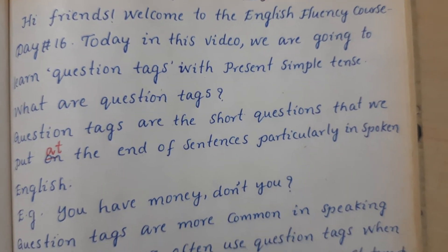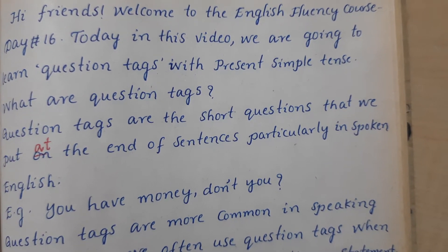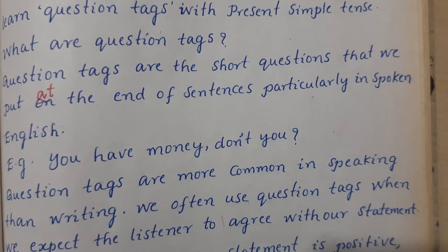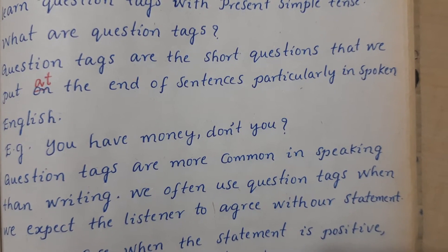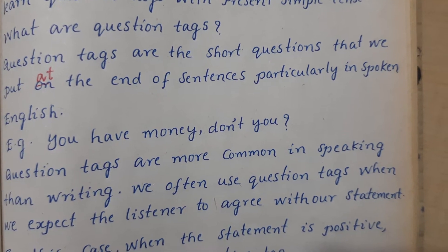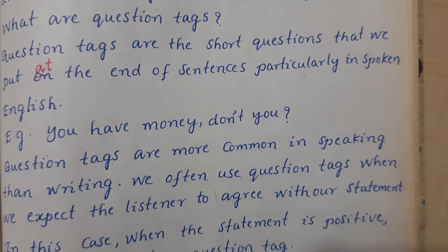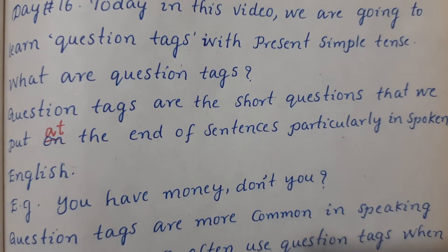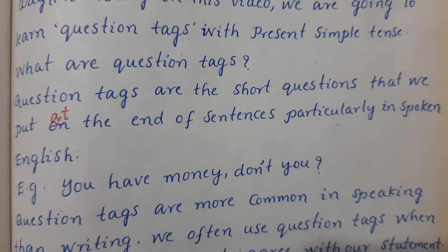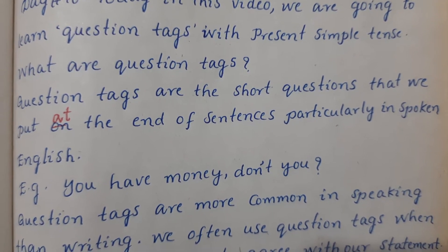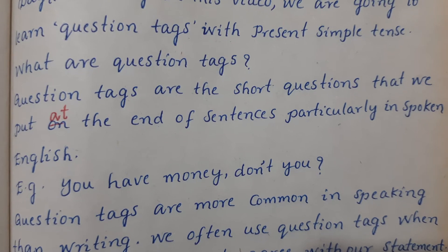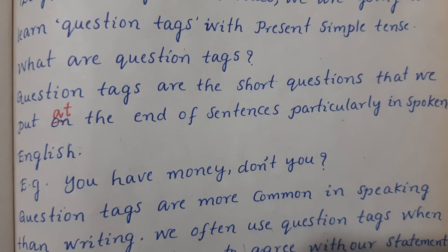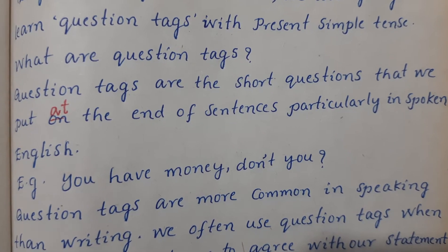What are question tags? Question tags are the short questions that we put at the end of sentences, particularly in spoken English. For example: 'You have money, don't you?' Question tags are more common in speaking than writing. We often use question tags when we expect the listener to agree with our statement.